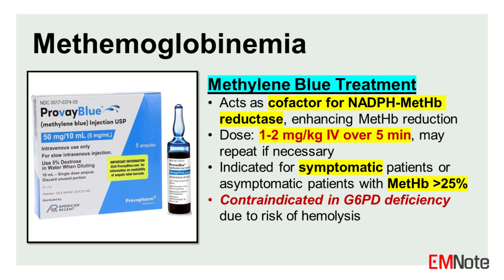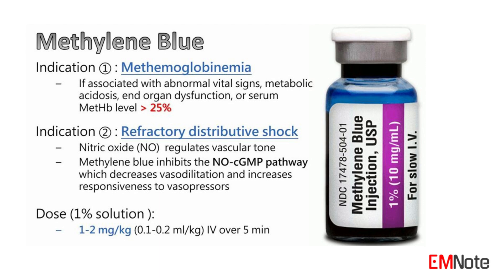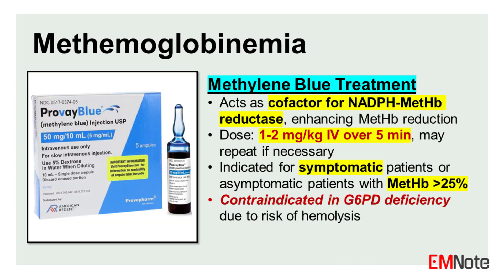Methylene blue dosage: 1-2 mg per kg intravenously over 5 minutes; effects are typically seen within 20 minutes, and repeated doses may be necessary. Indications include symptomatic patients with elevated methemoglobin levels or asymptomatic patients with methemoglobin levels greater than 25%. Methylene blue is contraindicated in patients with G6PD deficiency, as it may cause hemolysis in these patients.